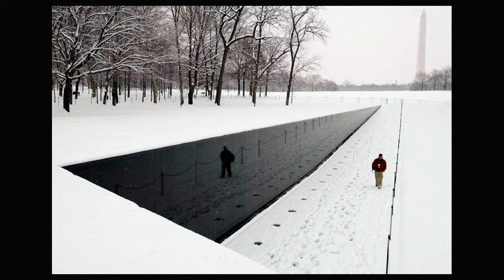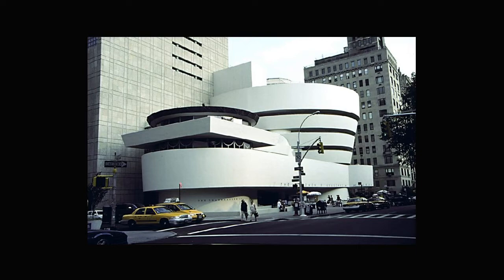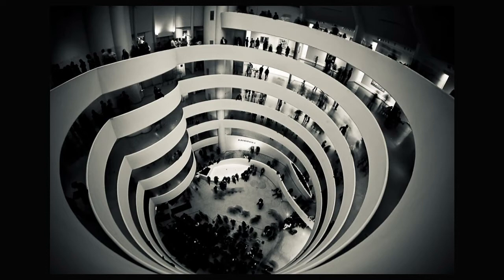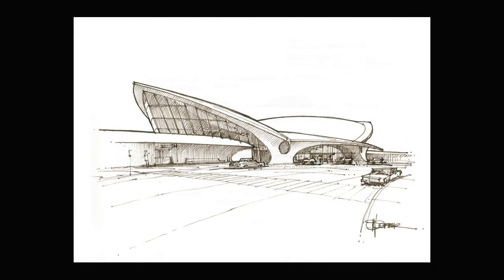Everybody's familiar with the Guggenheim Museum in New York City designed by Frank Lloyd Wright. It uses color, texture, and scale — a very strong form. It is an example of form follows function: the function of the building was determined and the form came out, so it tells a story of what's happening inside before you ever get inside. The TWA terminal, also in New York, is a bird taking flight — an example of duck architecture, where the theme is so strong you can see it clearly. This building was designed to look like a bird about to take flight. Eero Saarinen was the architect.